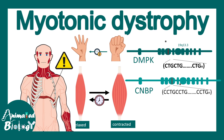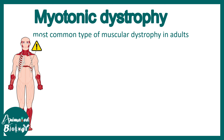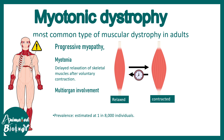In this video we'll be talking about myotonic dystrophy. As the name suggests, myotonic dystrophy means dystrophy of the muscle. It's the most common type of muscular dystrophy found in adults. It's a progressive myopathy that includes myotonia — that means delayed relaxation of the skeletal muscle after it is contracted, so there is a sustained contraction and delayed relaxation. It has multi-organ involvement, the prevalence is about one in 8000 individuals, and the inheritance pattern is autosomal dominant.